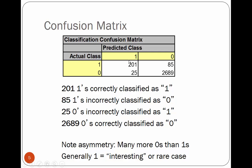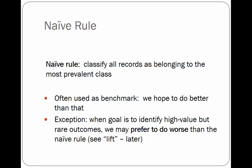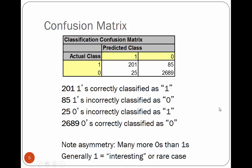You may notice there is asymmetry — ones are fewer than zeros. Out of roughly 3,000 cases, about 226 belong to class one and the rest to class zero. The naive rule, from its name, classifies all records as belonging to the majority or most prevalent class — in this case, class zero.